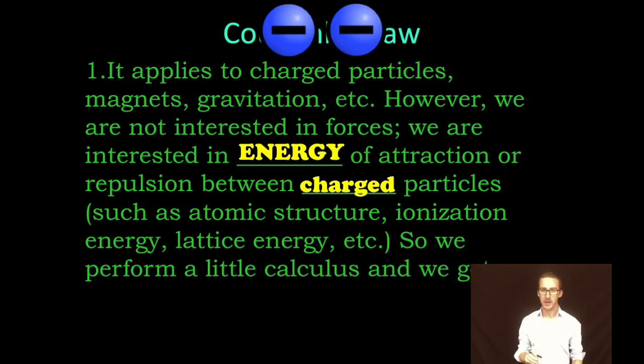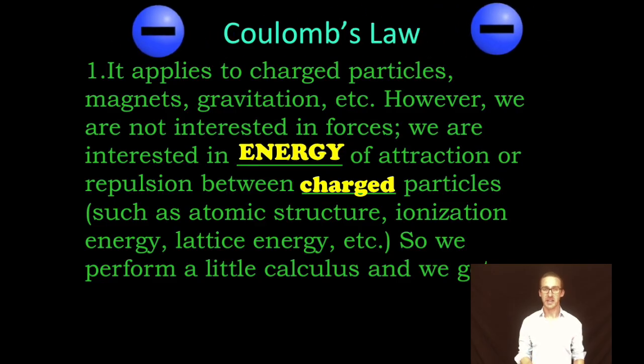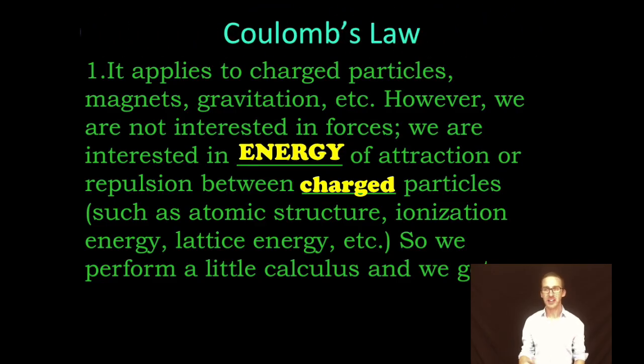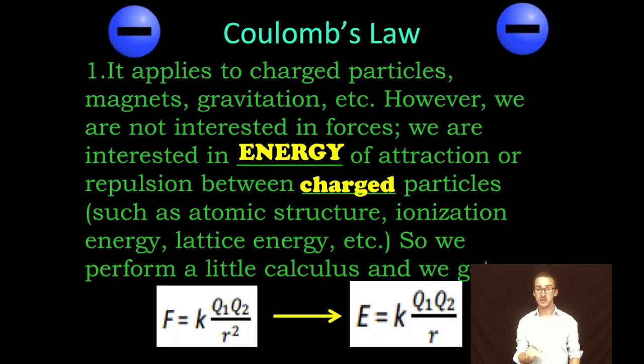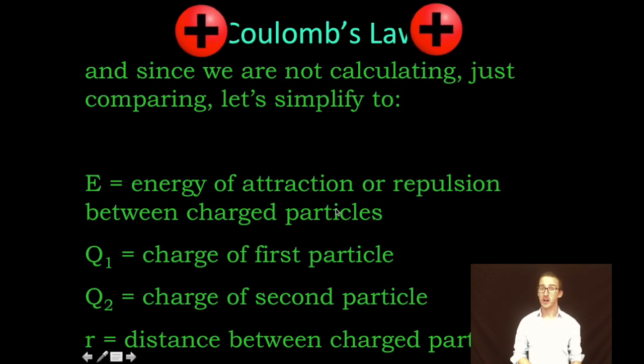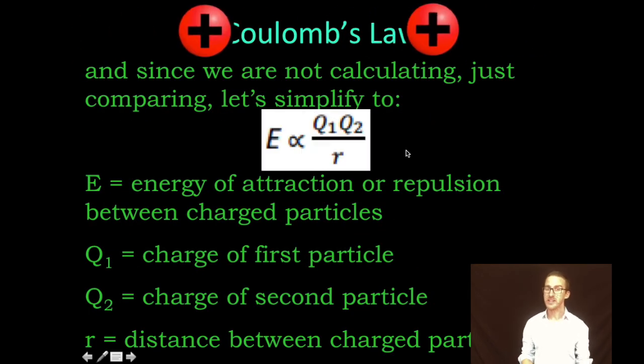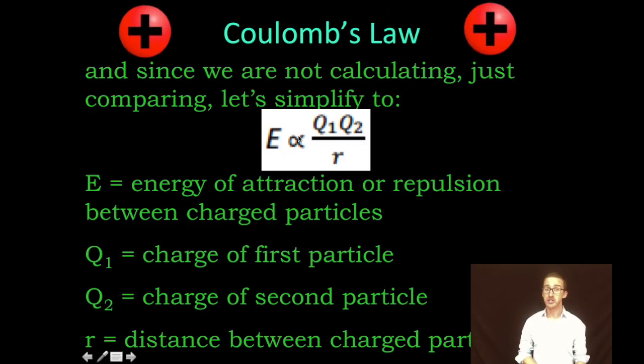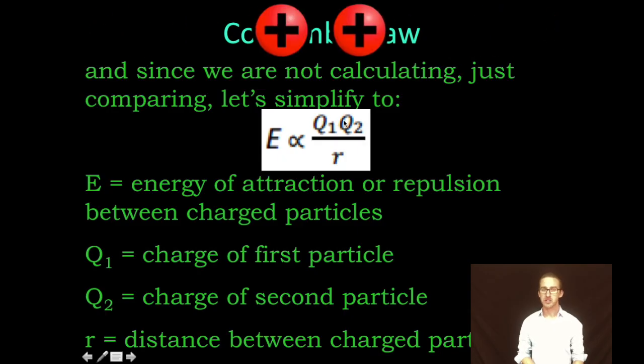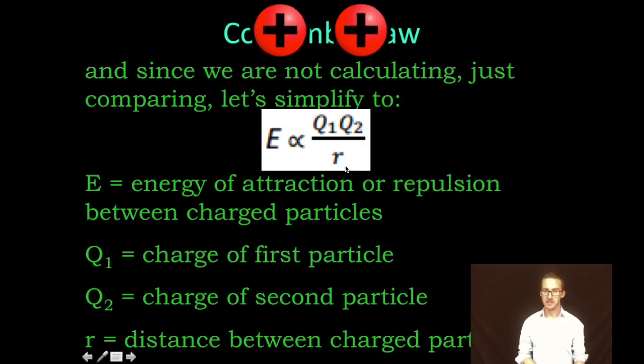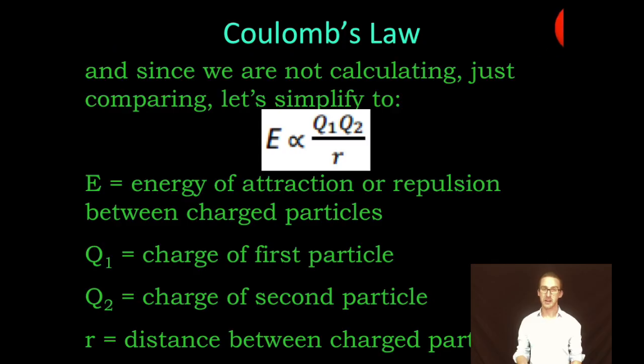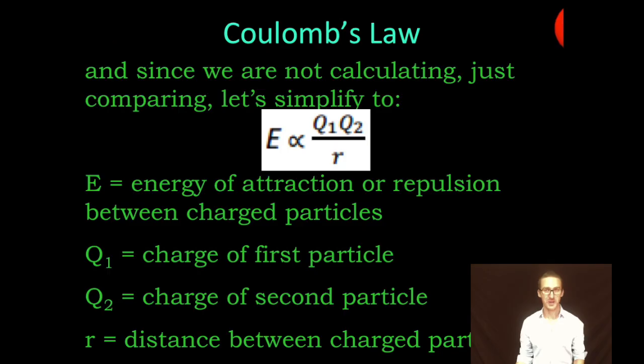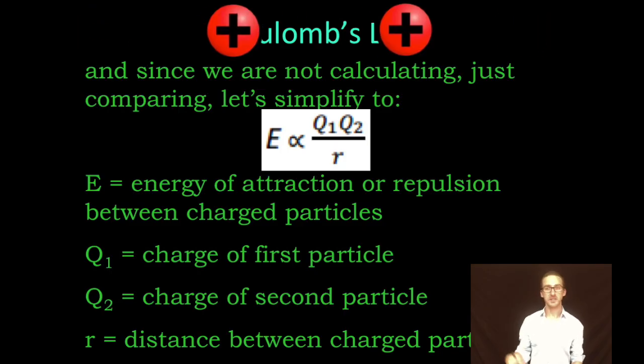So we're gonna tweak Coulomb's law a little bit, because we again are just gonna look at qualitatively what's going on. You will never actually have to perform a calculation. So we perform a little calculus, and we end up solving Coulomb's law equation for energy. And again, since we're not doing any calculations, we can just simplify that equation to tell us that the energy of attraction or repulsion is proportional to the product of the charges over the distance between those charges. In other words, the energy is directly proportional to the charge and directly proportional to one over the distance, or inversely proportional to that distance.